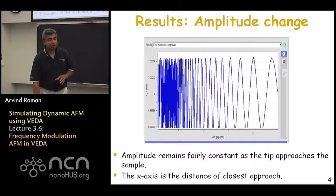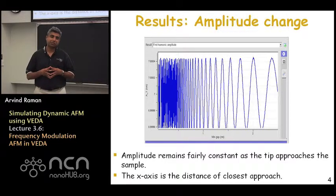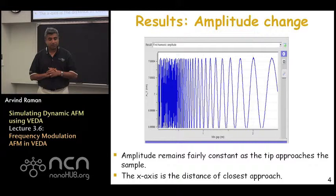So with these conditions if you go ahead and approach the sample, one of the first things you have to do when you do a simulation of frequency modulated AFM is to make sure that your controllers are working properly. Unlike amplitude modulation, when you approach the sample in amplitude modulation you don't have any feedback controllers on. In frequency modulation even for approaching the sample you have two feedback controllers. So it is very important to check that your feedback control parameters are actually stable and giving you appropriate results.